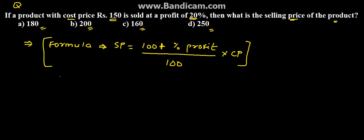By substituting the values in this formula, we get 100 plus 20 upon 100 into cost price 150, which comes to 120 upon 100 into 150, that is equal to 180.